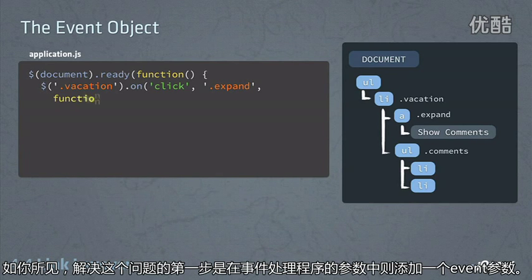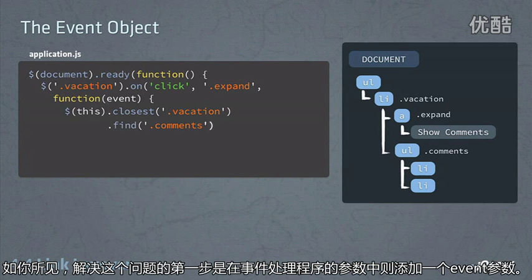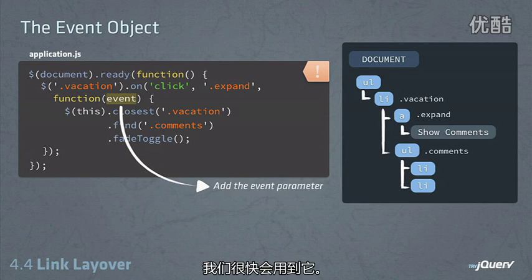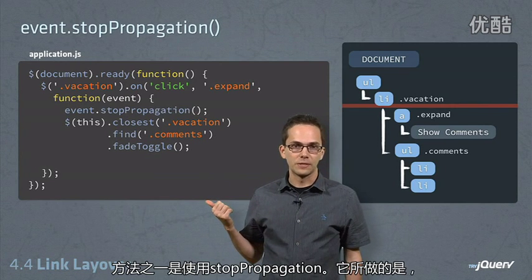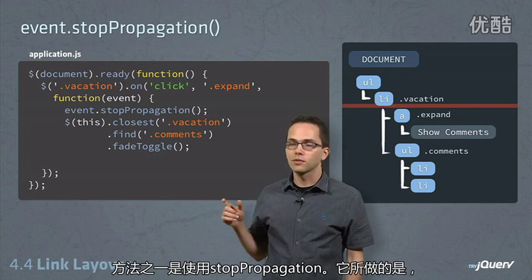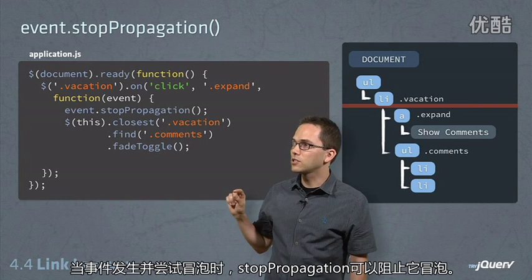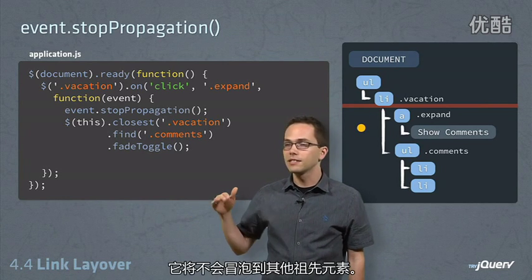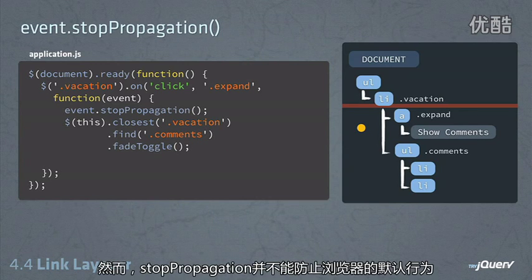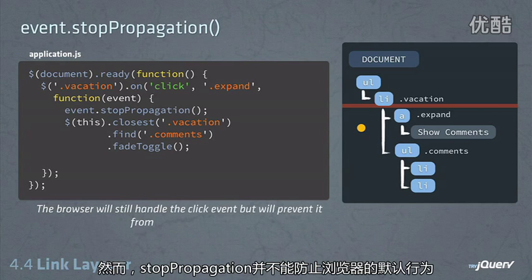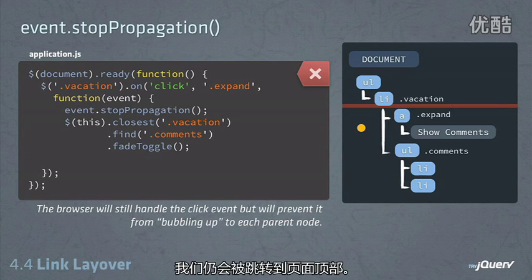The first step is to add the event parameter inside of our event handler, as you see here — we're going to need that in a minute. One way we can try to fix this is by using stopPropagation. What that's going to do is prevent the event from bubbling up to other ancestors. However, stopPropagation does not prevent the default behavior from the browser, and we're still going to pop up to the top of the page. So this is not our solution.